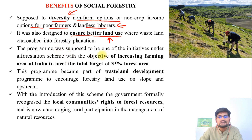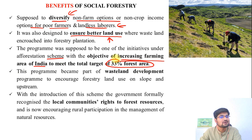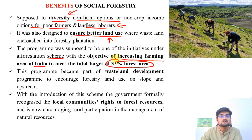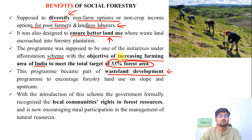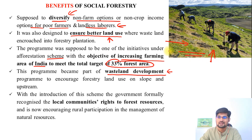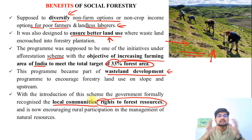The program was one of the initiatives under the afforestation scheme of Government of India, with the objective of increasing India's forest area to meet the national target of 33% forest cover — and social forestry contributes to this. Apart from this, the program became part of wasteland development management, utilizing degraded mountain slopes to stabilize them, reduce soil erosion, and reduce gully erosion. With the introduction of the scheme, the government formally recognized local communities and gave them rights to forest resources — integrating local communities was very important.